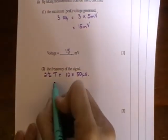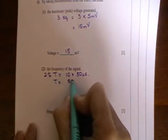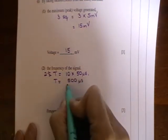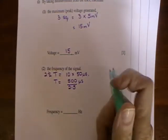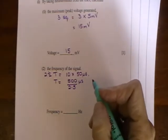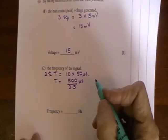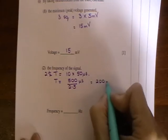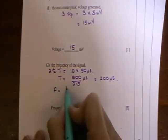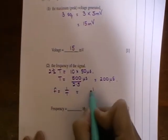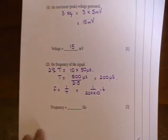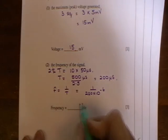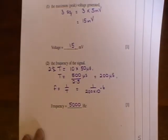And therefore we can work out the time period of 1 wave. So that's 500 microseconds divided by 2.5, and that gives you an answer of 200 microseconds. And then to find frequency you have to do 1 over the time period. So it's 1 over 200 by 10 to the minus 6 because it's in microseconds, and that gives you an answer of 5000 hertz.